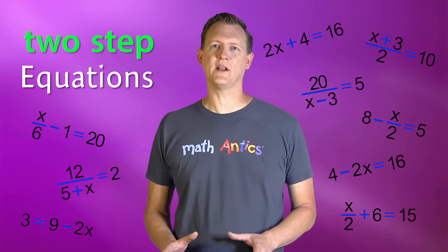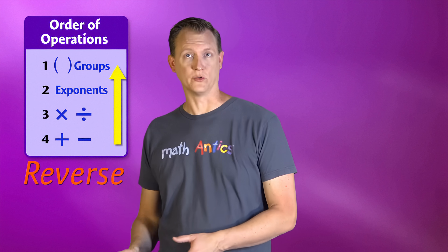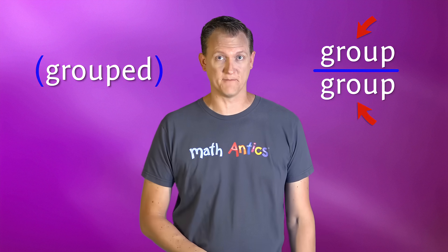As you can see, solving two-step equations is definitely more complicated than single-step equations because there are so many different combinations and different ways to group things. But if you just take things one step at a time and remember to undo operations using the reverse order of operations rules, it will be much easier. Just pay close attention to how things are grouped in an equation, and be on the lookout for those implied groups on the top and bottom of a fraction line.